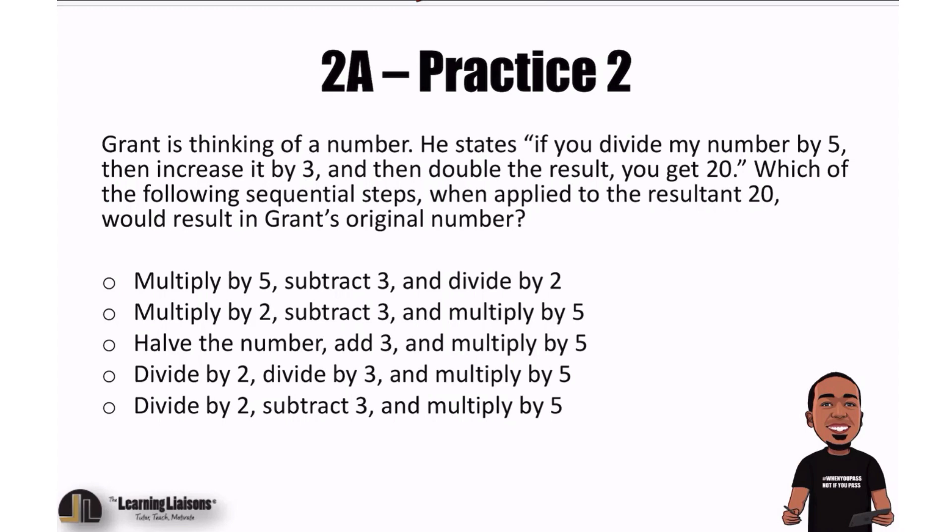Grant is thinking of a number. He states, if you divide my number by 5, then increase it by 3, and then double the result, you get 20. Which of the following sequential steps, when applied to the result of 20, would result in Grant's original number?